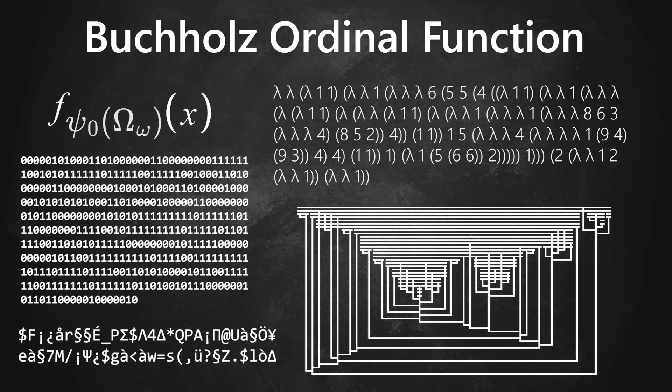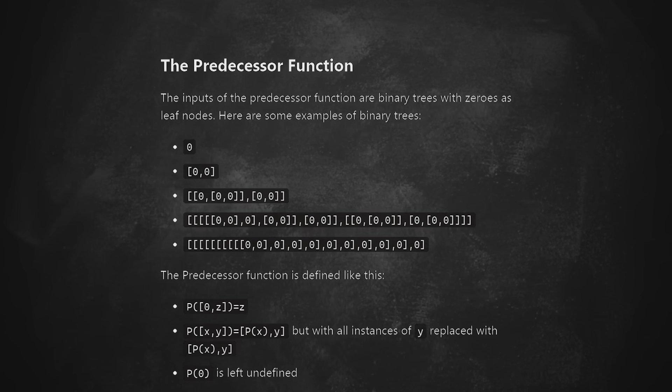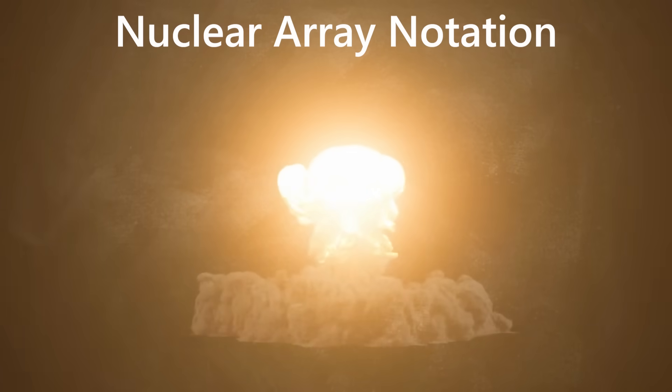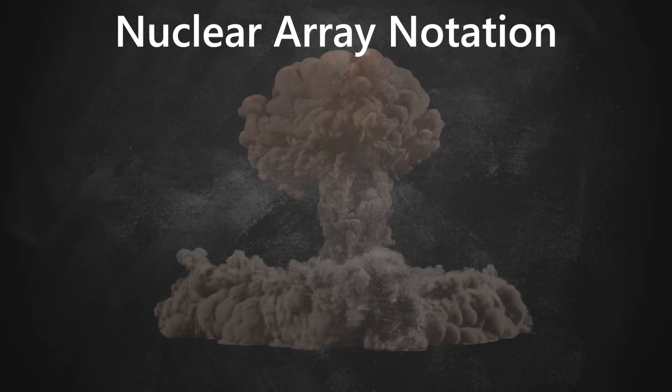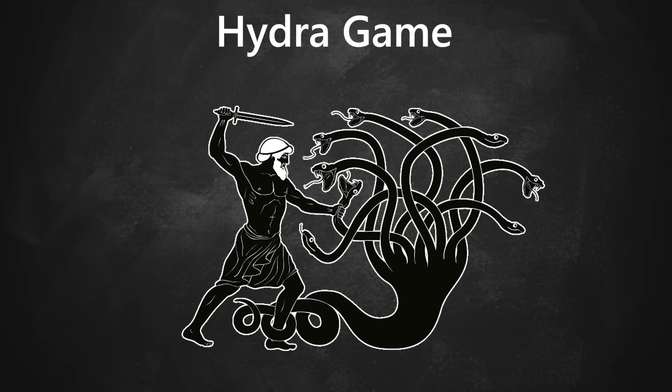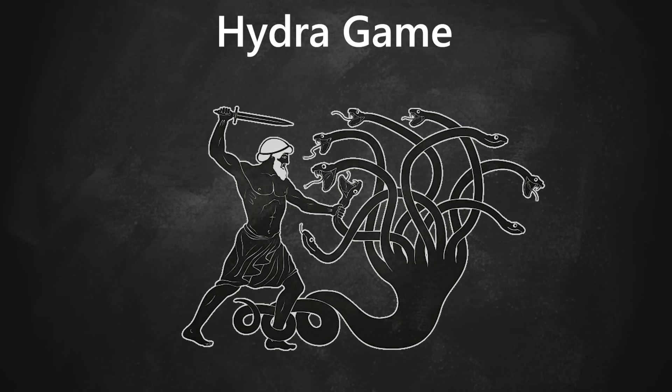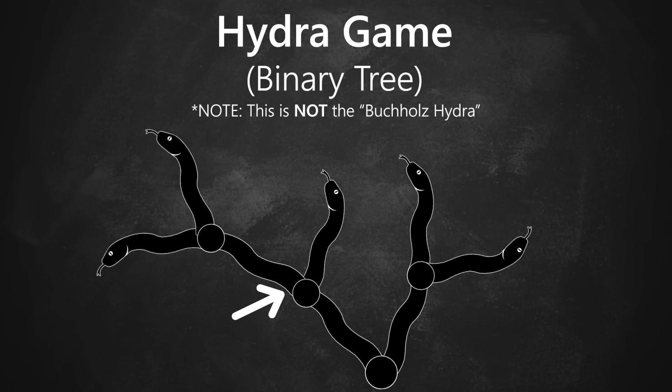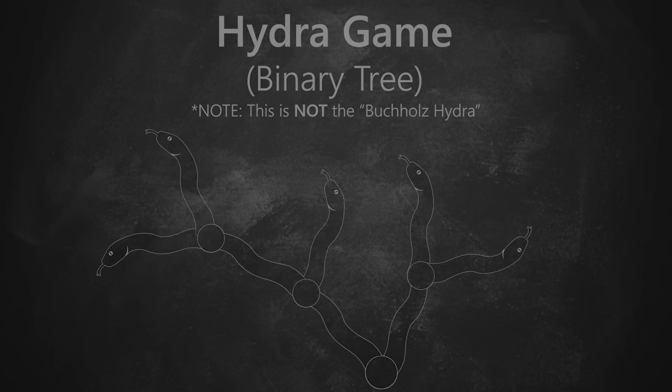Alright, now let's start where we left off last time. Because there's a reason the Buchholz ordinal function compresses so well. There's a really simple and elegant algorithm using nuclear array notation, which kind of plays out like a hydra game. So imagine you're Hercules, and you need to defeat a hydra. How many chops does it take? This kind of hydra is restricted to binary trees, meaning each node is either a head or a two-way split. And there's two rules for how to cut heads.